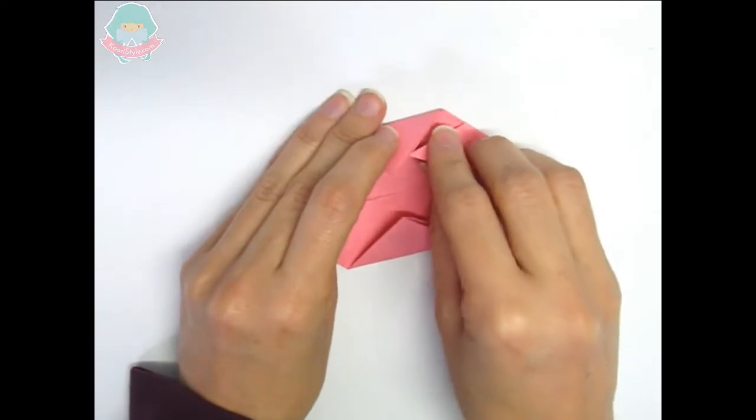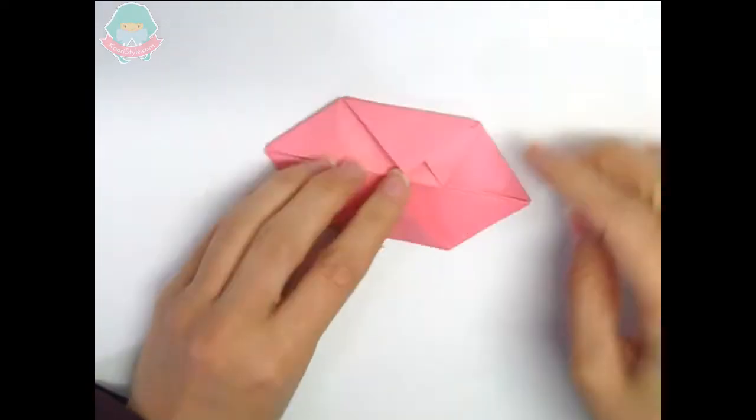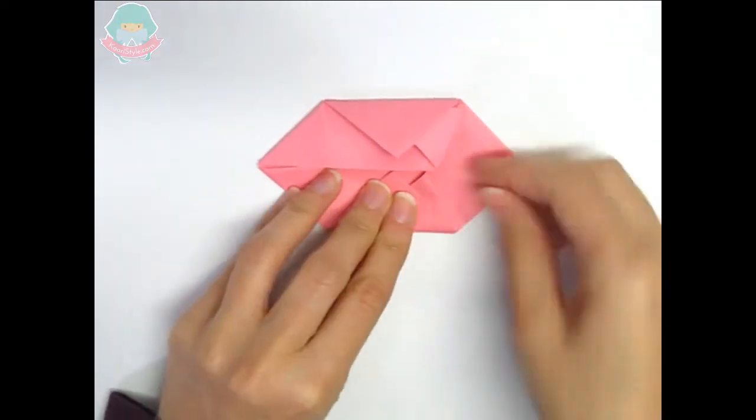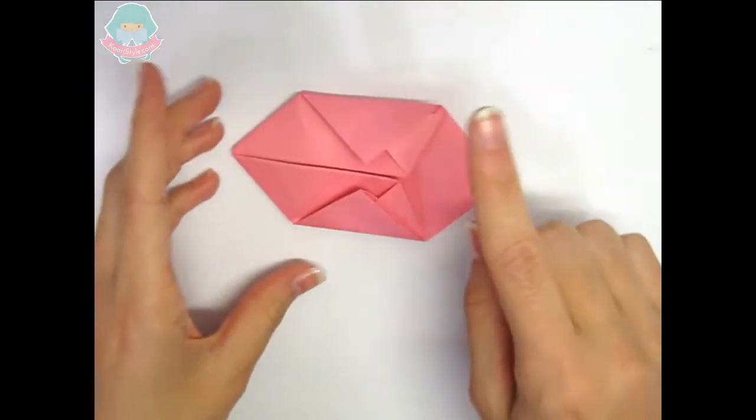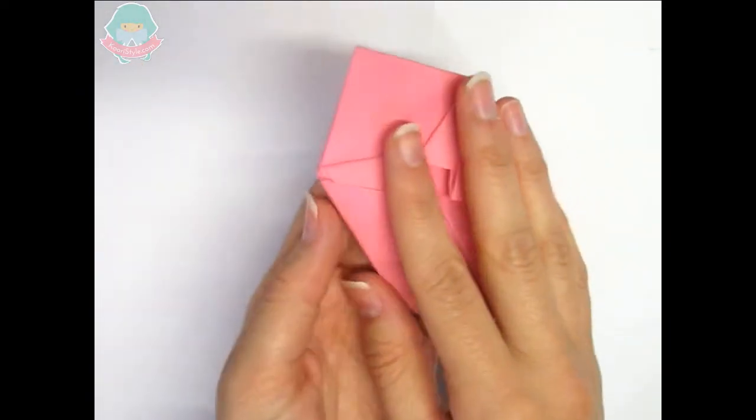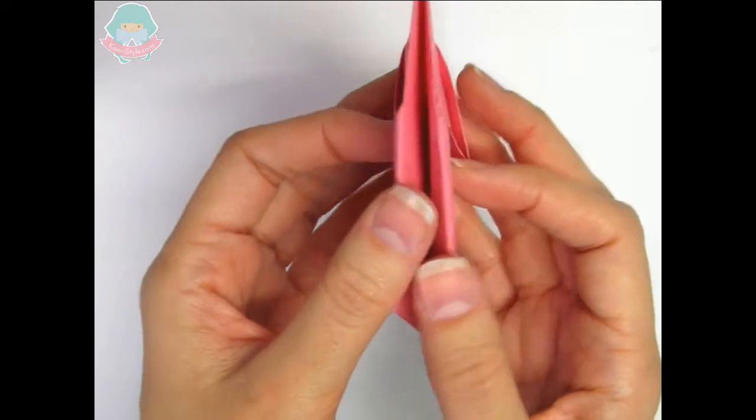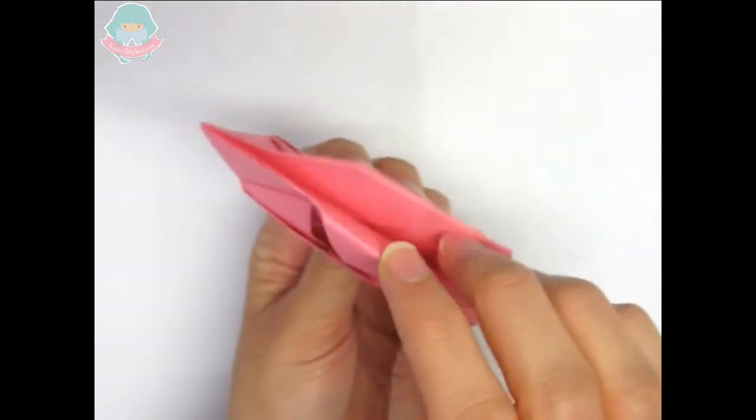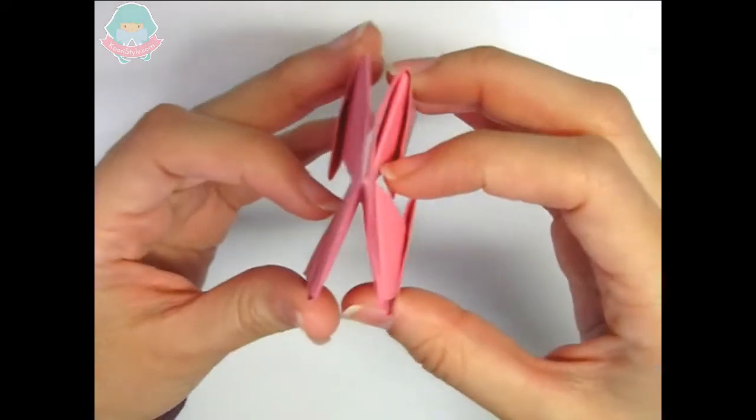So we have a little bag, we grab our corner and we place it inside. Now the final step is to grab the sides and fold it like this so we can hide all the little bags.